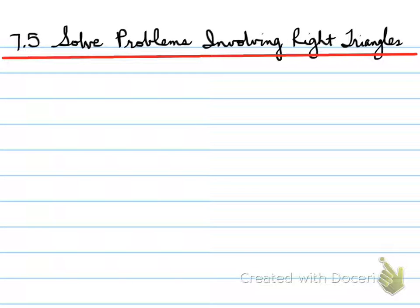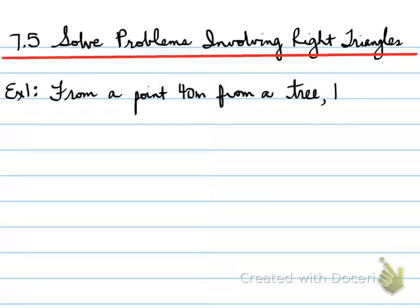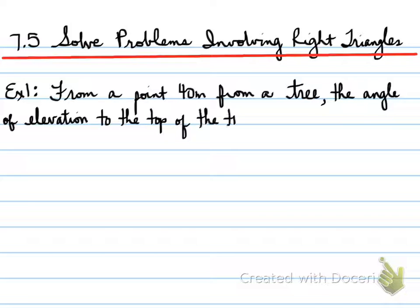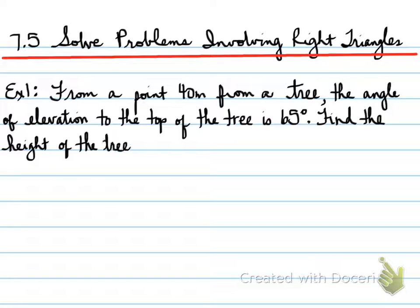7.5, Solving Problems Involving Right Triangles. Example 1: From a point 40 meters from a tree, the angle of elevation to the top of the tree is 65 degrees. Find the height of the tree.